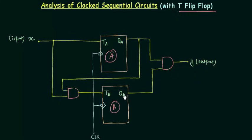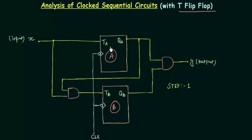The outputs are QA and QB. In this case there are two combinational logics: the first one is this AND gate which is the input combinational logic, and the second one is this AND gate that is our output combinational logic. So let's start with step number one, which is to find out the input and output equations. I will start with the input equations — I have to find out the expression for TA and the expression for TB.